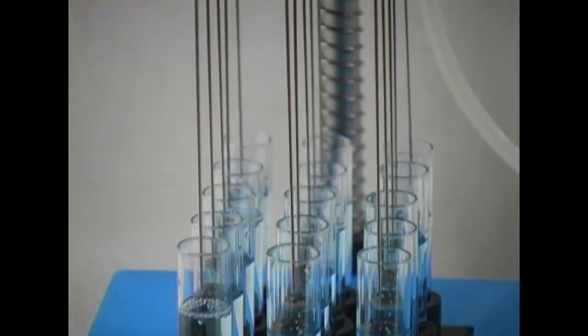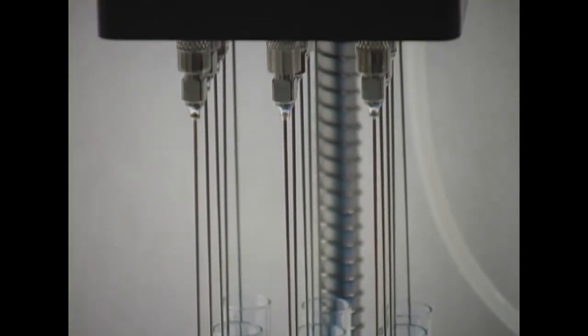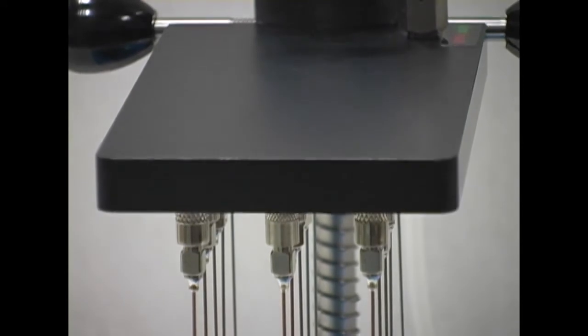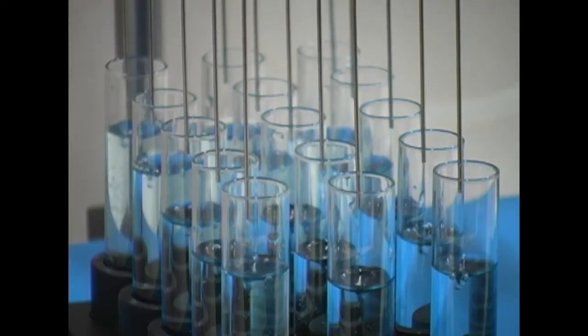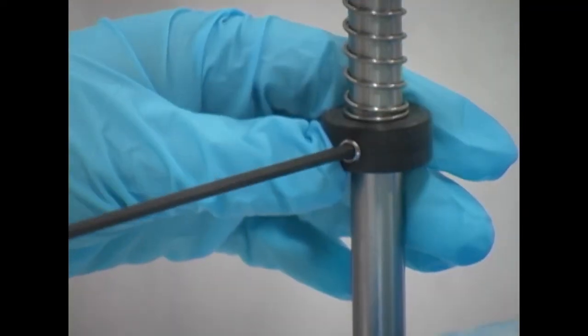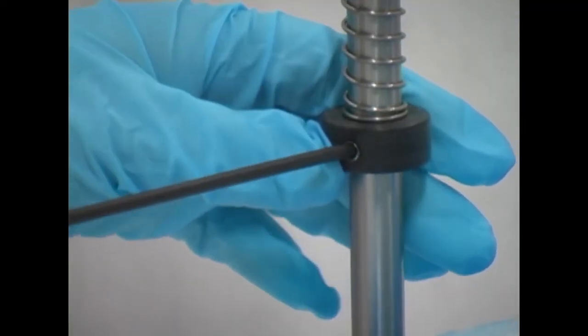The 15 position microvap comes standard with stainless steel lure lock hubs and 4 inch by 19 gauge needles. The nitrogen distribution array raises and lowers as a unit. The microvap comes with a guide groove to precisely align the needles above each sample.